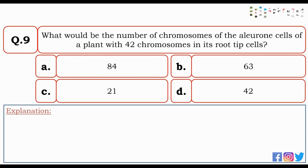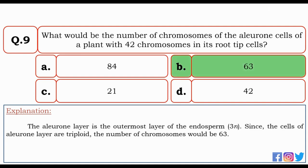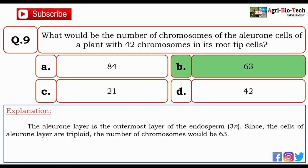Next question: what would be the number of chromosomes in the aleurone cells of a plant with 42 chromosomes in its root-tip cells? Options: 84, 63, 21, and 42. The correct option is B — 63. The aleurone layer is the outermost layer of endosperm, i.e., 3N. Since the cells of the aleurone layer are triploid, the number of chromosomes would be 63.